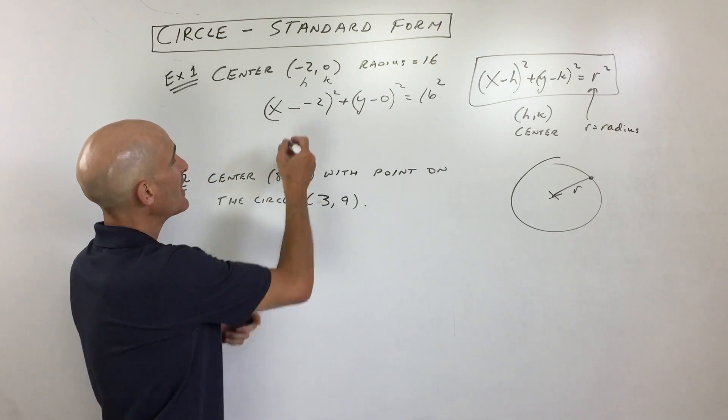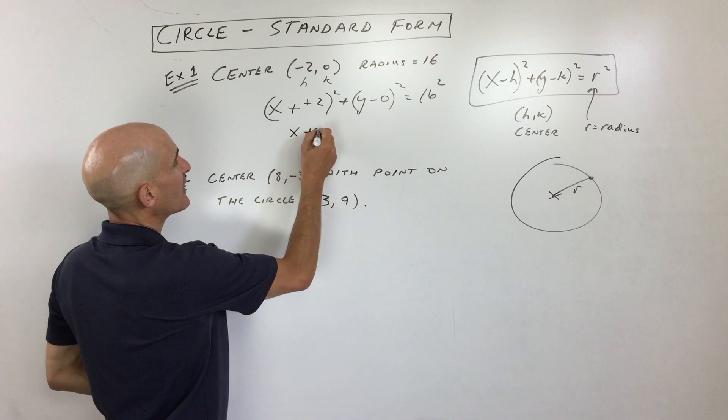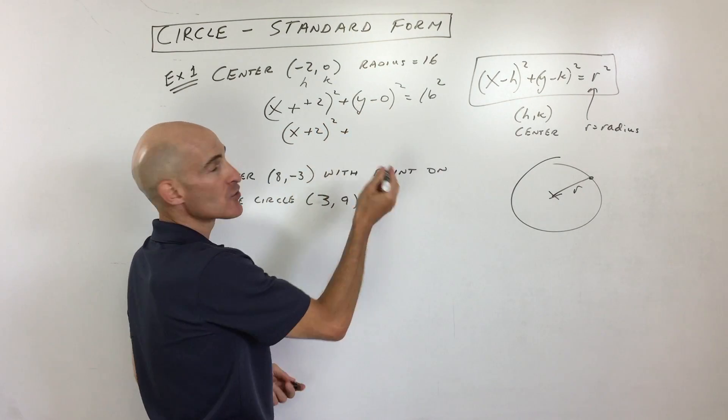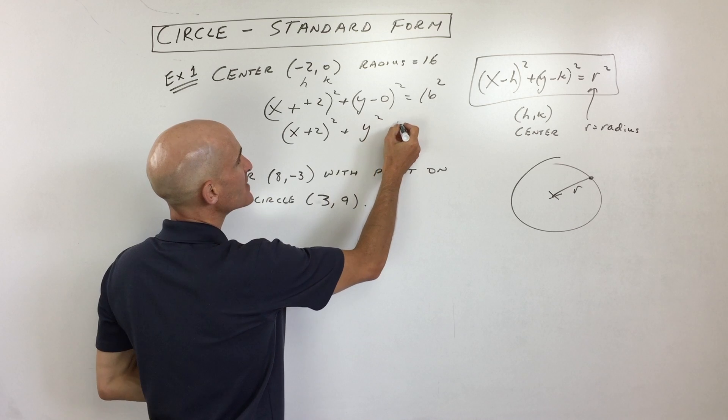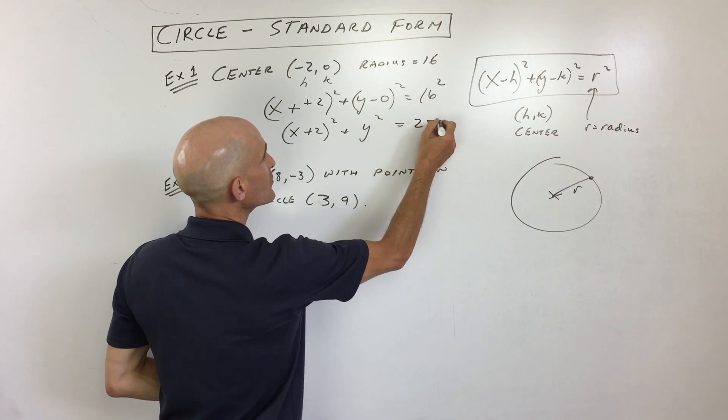So when you subtract a negative, it's like adding the opposite, so that's really like x plus two squared. And y minus zero is really just y, so I'm just going to write y squared, and then 16 squared is equal to 256.